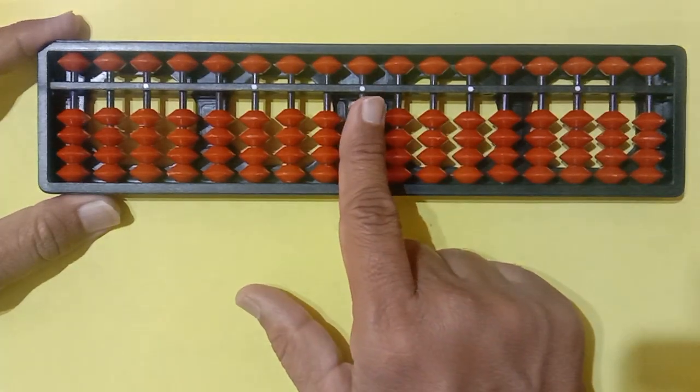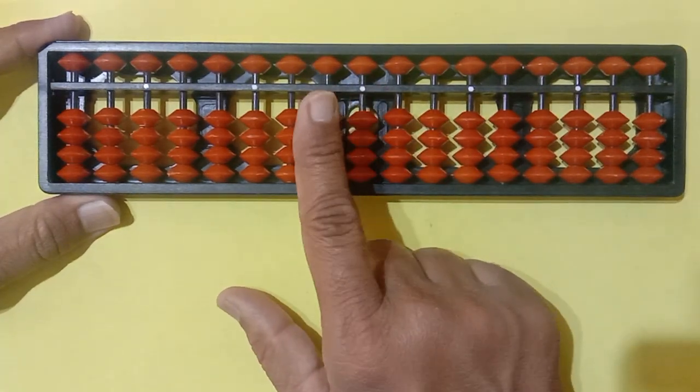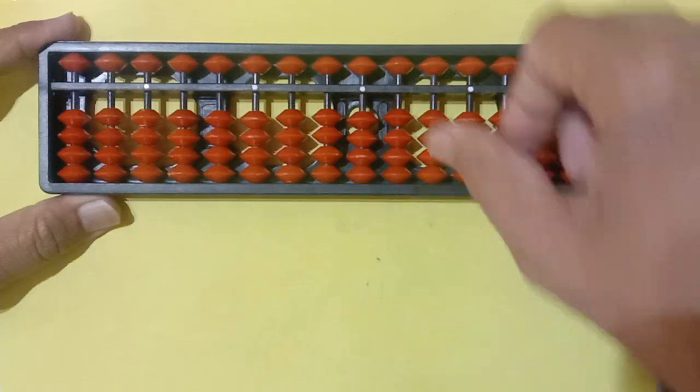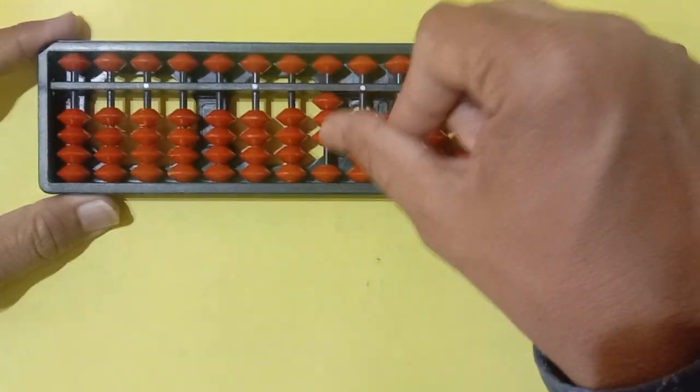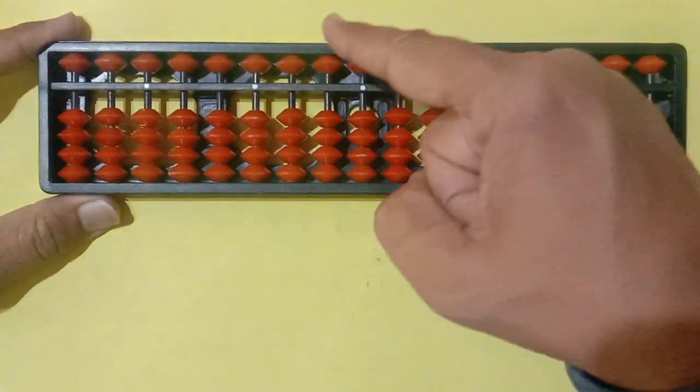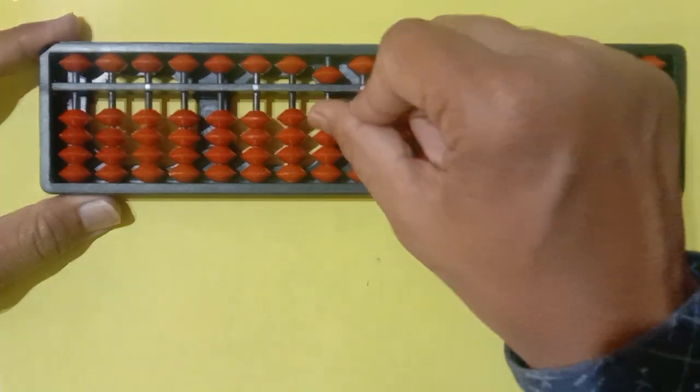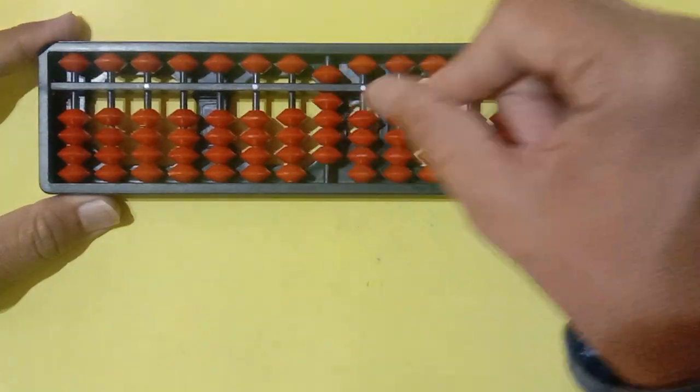Here you can see, it's the tenth place. This is the one's place, and this is the tenth place. If you go to the tenth place, same. 10, 20, 30, 40, and this is 50, 60, 70, 80, 90.